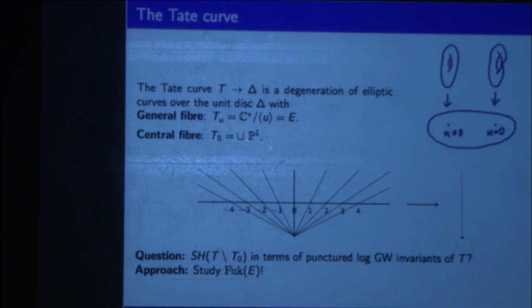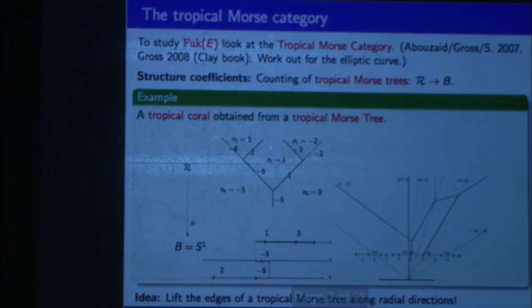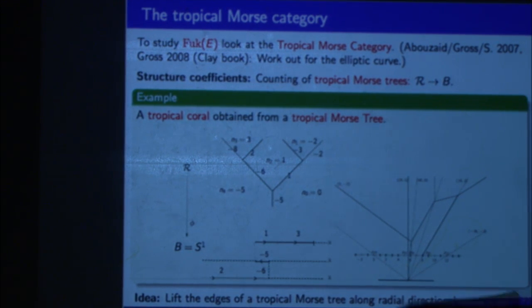And we want to understand the symplectic homology of the Tate curve minus the central fiber in terms of some punctured log Gromov-Witten invariants. And our approach towards it was we first want to start with the Fukaya category of the elliptic curve. And when I say here Fukaya category, I mean Lagrangian Floer theory. Okay, so there's a category called the tropical Morse category introduced by Abouzaid, Gross, and Siebert. And we used this category to study the Fukaya category of the elliptic curve. This is a nice category. You can relate it both to the Fukaya category and the category of coherent sheaves, the right-bounded derived sheaves. And the structure coefficients in this category are given by tropical Morse trees, which are just maps from a ribbon graph to your integral affine manifold B.